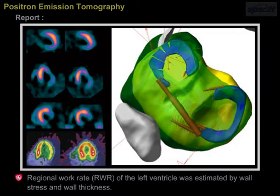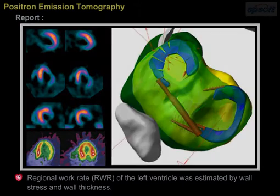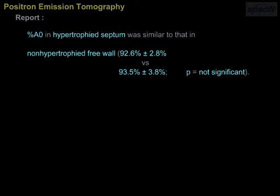Regional work rate (RWR) of the left ventricle was estimated by wall stress and wall thickness. Percent A0 in the hypertrophied septum was similar to that in the non-hypertrophied free wall: 92.6% ± 2.8% versus 93.5% ± 3.8%, where P is not significant.